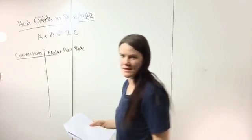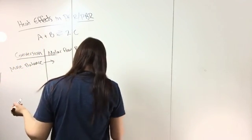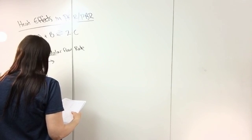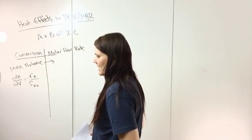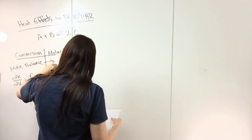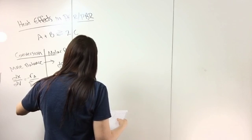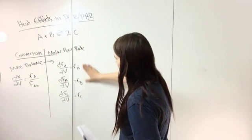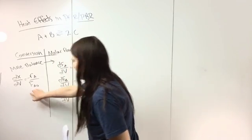The first step is a mole balance. For a PFR in terms of conversion: dX/dV = -rA / FA0. For molar flow rate, you write an equation for each species: dFA/dV = rA, dFB/dV = rB, dFC/dV = rC. This molar flow rate form is required if you have multiple reactions. If you don't, you can work in terms of conversion.